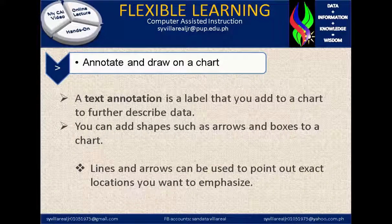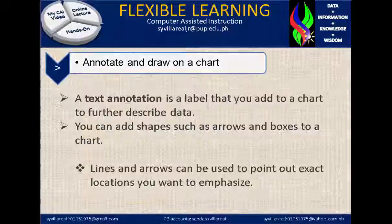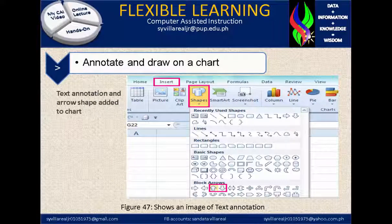A text annotation is a label that you add to a chart to further describe the data. You can add shapes such as arrows and boxes to a chart. Others are lines, and an arrow can be used to point out exact locations you want to emphasize. Figure 47 shows an image of text annotation by using shapes.